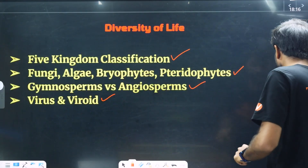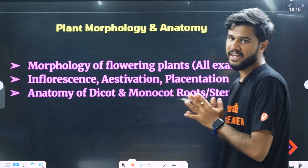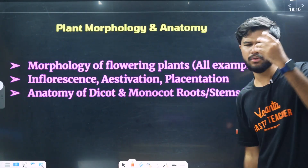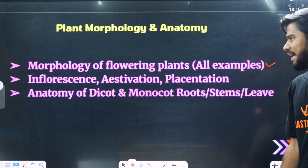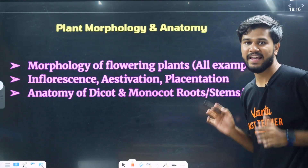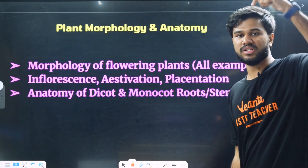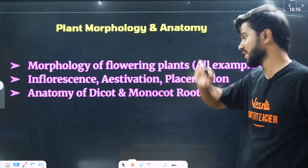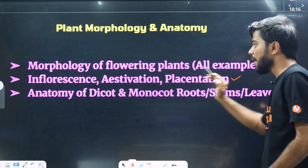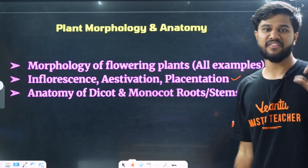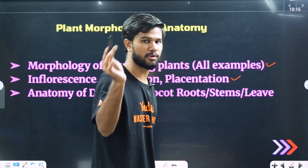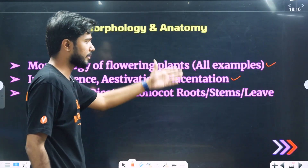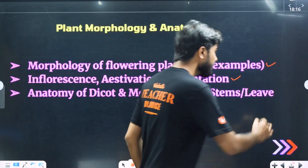That is called Plant Morphology and Anatomy. On the inflorescence, there is a type of inflorescence: racemose, cymose, aestivation, venation, placentation, paranthile placentation. The other thing is called anatomy — anatomy of dicot leaf, parenchyma, anatomy of monocot, dicot stem and leaf come in this topic.